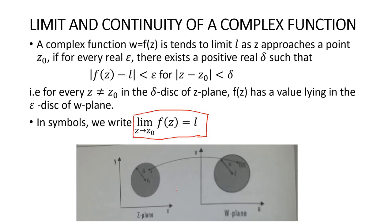Here is the figure representing the mapping of a complex function. In the z-plane, z is a complex number, and in the w-plane, f(z) represents a complex number, which we denote by w. So w = f(z), meaning f maps the complex number z to f(z).